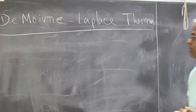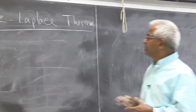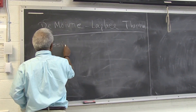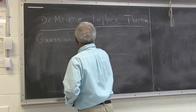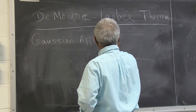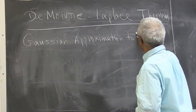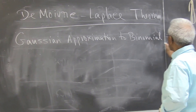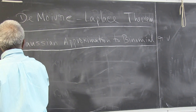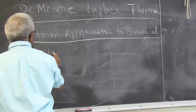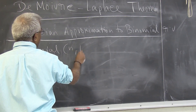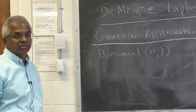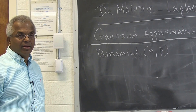Let's start with the De Moivre-Laplace theorem. That's a Gaussian approximation to binomial — a Gaussian or normal approximation to a binomial random variable. A binomial random variable has two parameters, n and p. This comes up in a coin tossing experiment: you toss a coin n times and p represents the probability of getting a head.